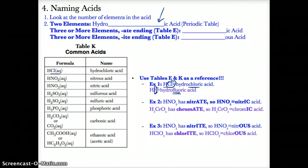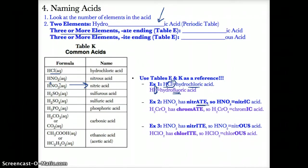As noted before, HNO3 is H+ followed by NO3-. NO3- is nitrate. Since it has the -ATE ending and three or more elements in HNO3, you name it nitric acid.